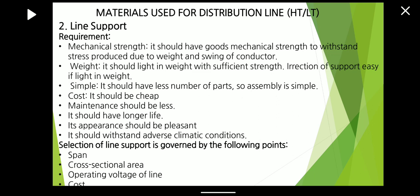The selection of line support is governed by the following points. Span is very important — in the span, no sag or very small sag should be produced. If sag is produced, it causes a voltage drop. Then cross-sectional area, operating voltage of the line, and lastly cost and local conditions.